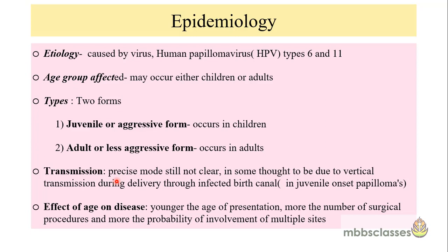The exact mode of transmission is not known, but maternal to fetal transmission is the proposed mechanism in the juvenile type. In children, the disease is thought to be acquired through vertical transmission during delivery through the infected birth canal. It is seen that younger the age of presentation, more the number of surgical procedures the patient will need and more is the probability of involvement of multiple sites. In adults, the papillomas are usually in one site and they don't recur much, meaning they have less aggressive behavior.